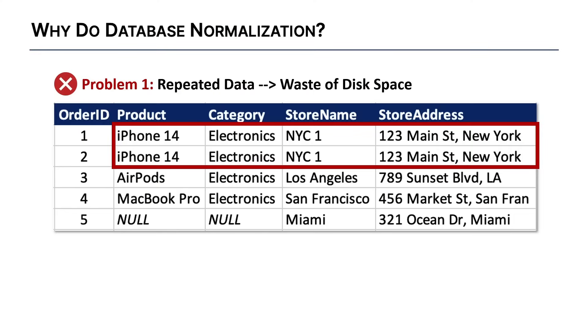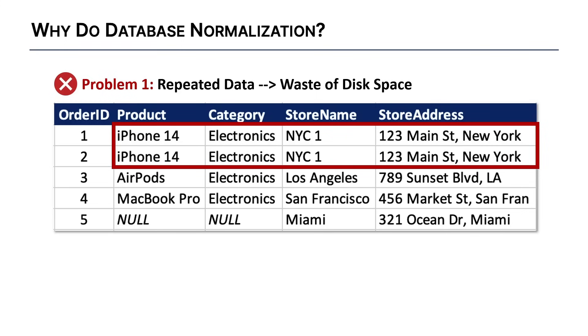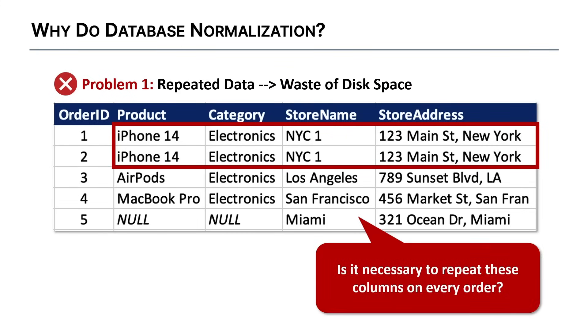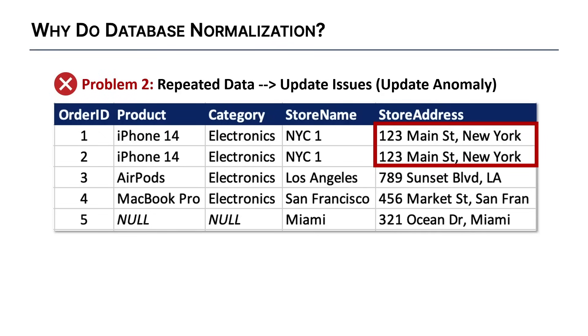For instance, here we repeat the product name, the category, the store name, and the store address multiple times. That adds a lot of disk space and begs the question of whether we need all of these columns repeated. I'll show you how to eliminate these redundancies without actually losing the data.